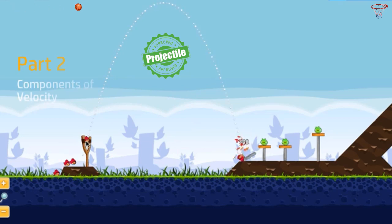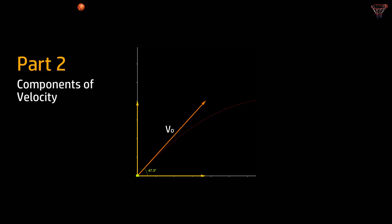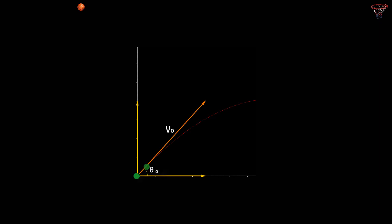So if a ball is thrown up with a velocity v₀ at an angle theta, the velocity v₀ can be split into two components — one vertical and the other horizontal. The horizontal component will be v₀ cos θ₀ and the vertical will be v₀ sin θ₀.